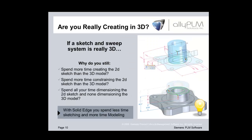Think about these questions throughout today's demonstration. For those of you with a 3D system — are you really creating in 3D? In a traditional sketch-and-sweep system, you draw a profile in a plane and sweep it into 3D space. If that's really 3D, why do we spend so much time in the 2D sketch, constraining it and placing dimensions there, just to get the 3D model? Also, if you want to change a feature, why do you always have to go back to the sketch to make that change?